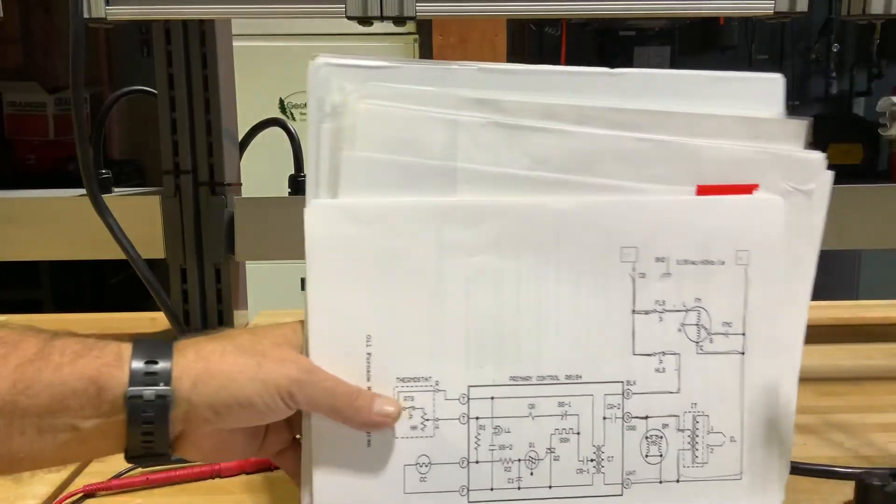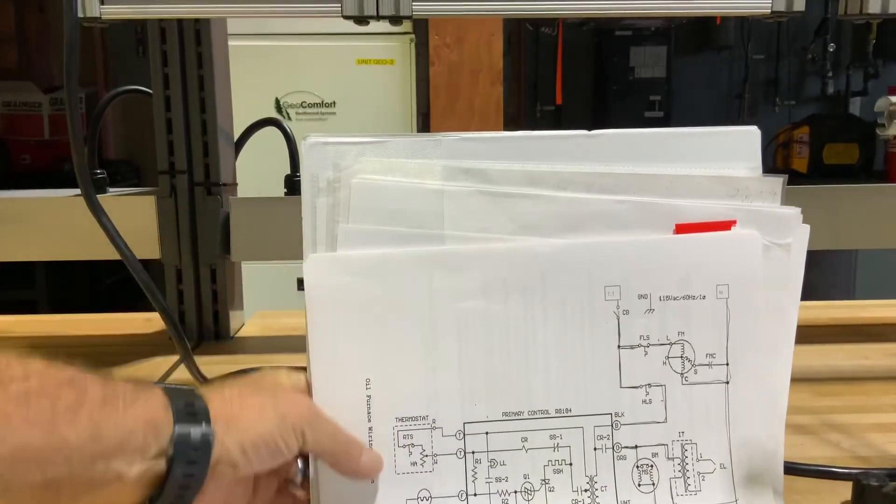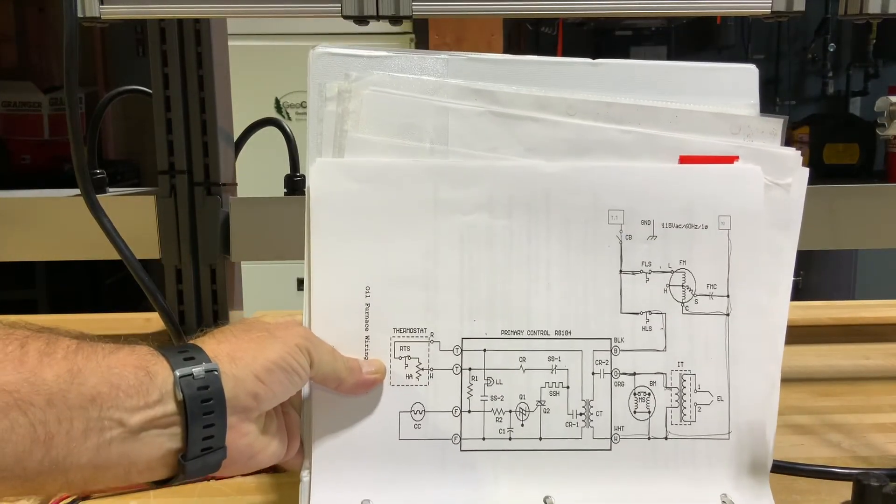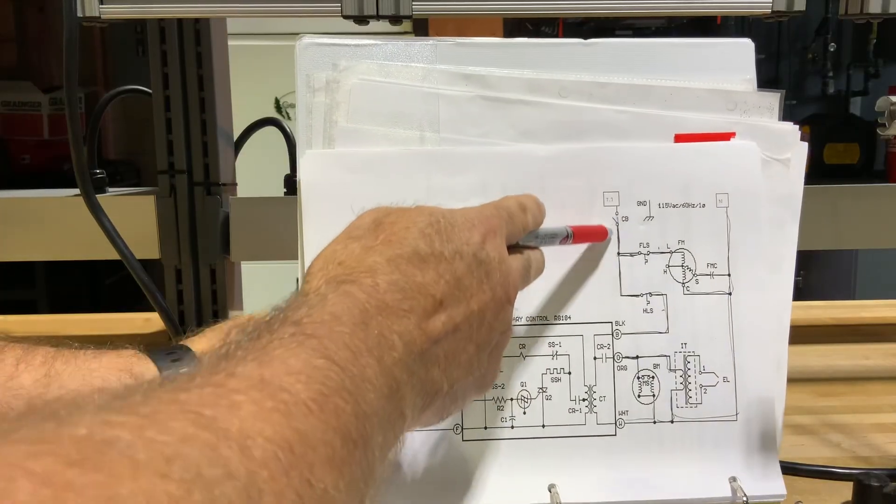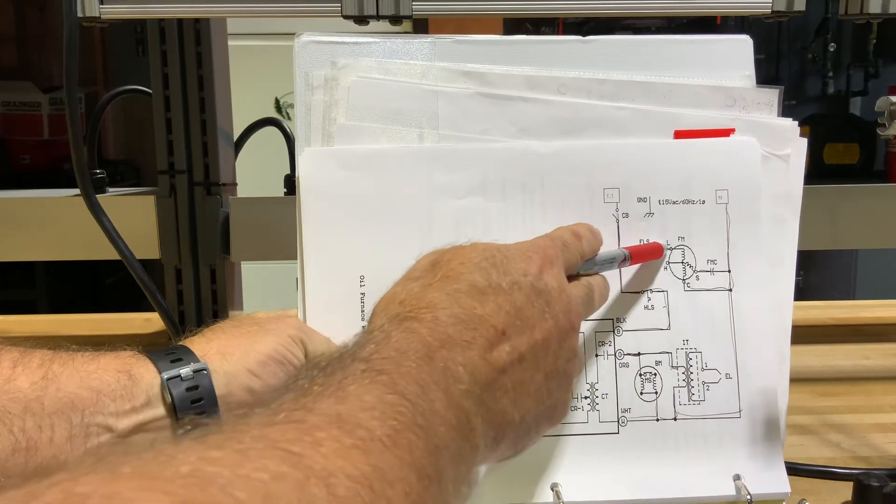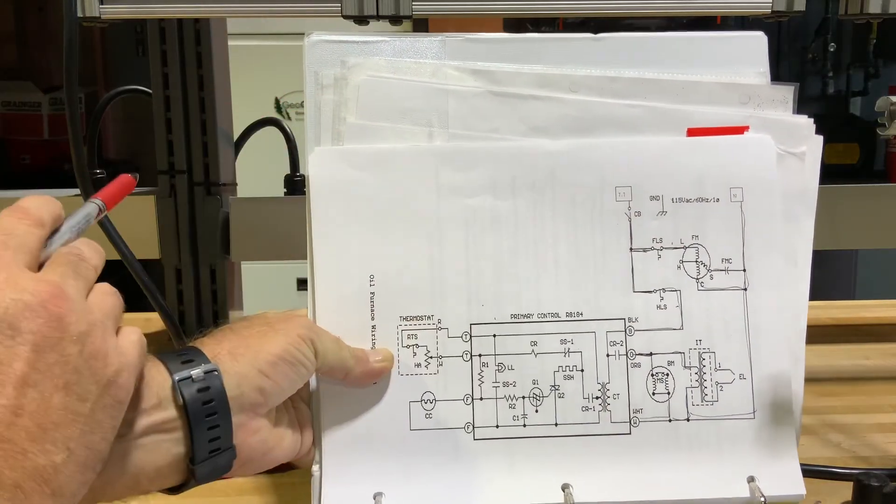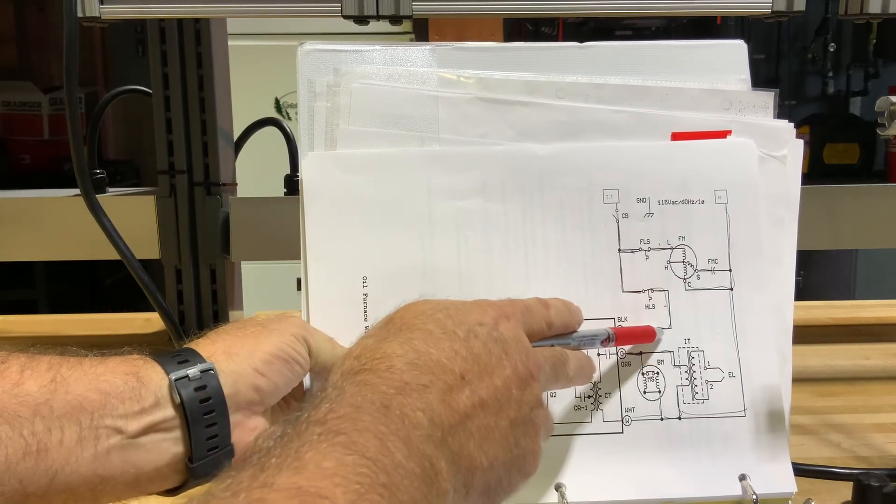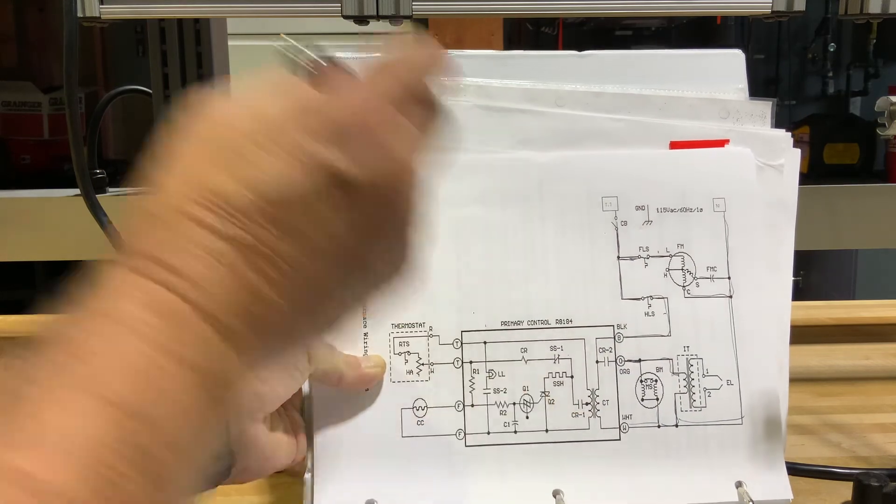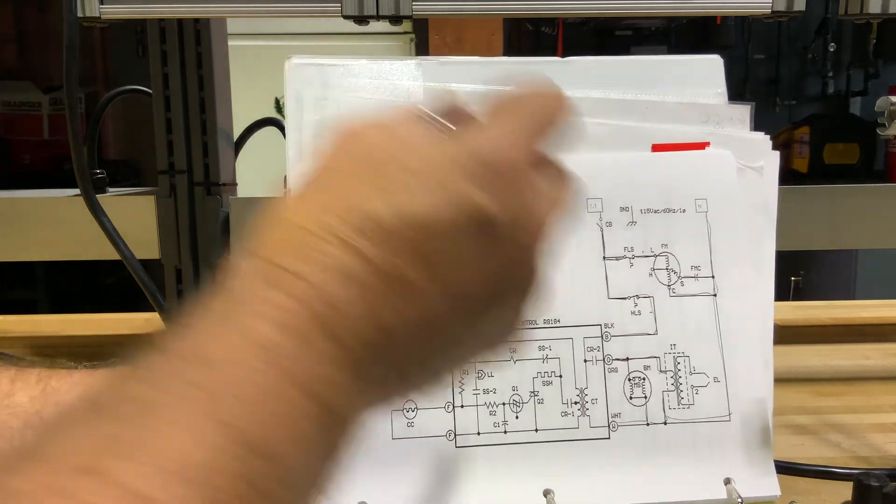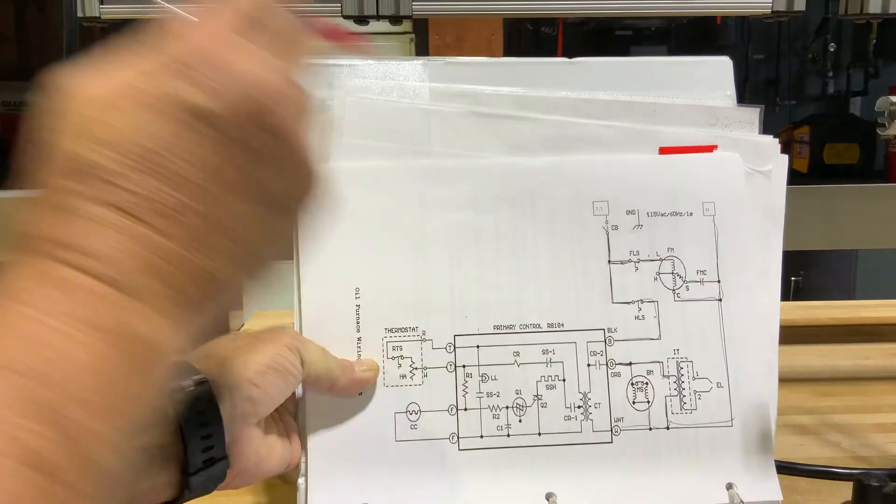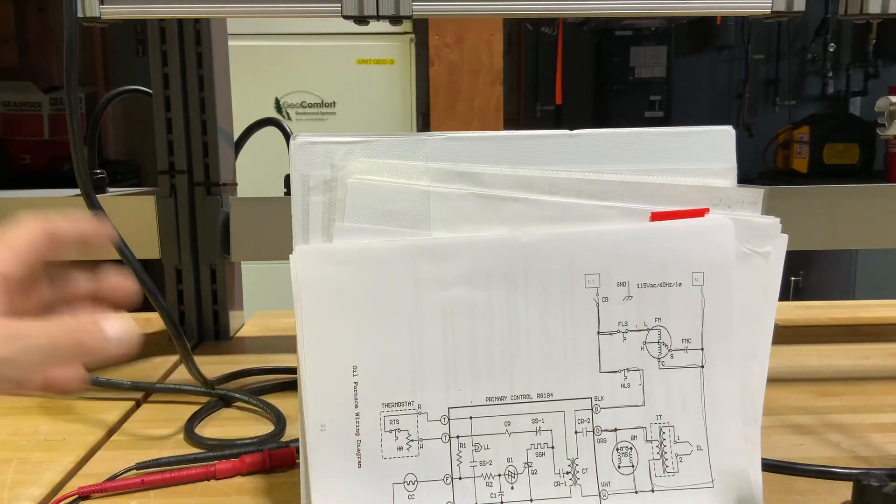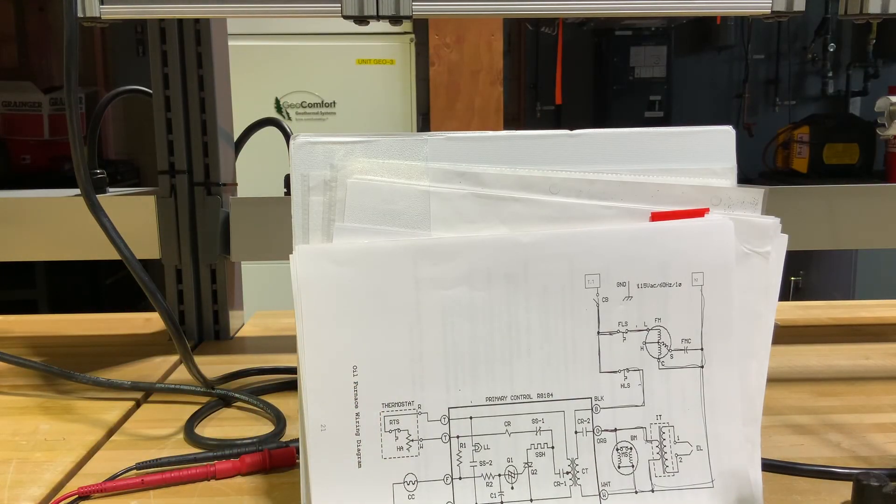If we look at this wiring schematic, we can see here's our incoming power, here's our fan switch going to our fan motor, here's our limit switch. Now this is your black wire - that black wire is going to our primary control. So if this opens, we kill all power to our primary control. That shuts everything down. So that's kind of how that fan limit switch works.